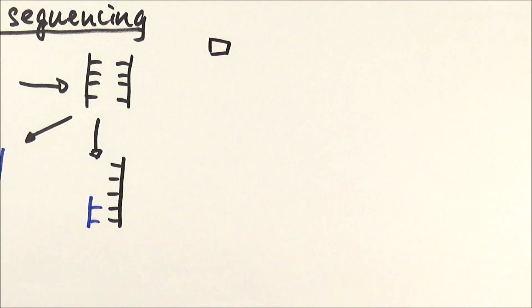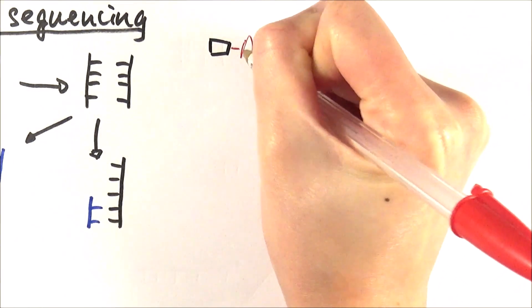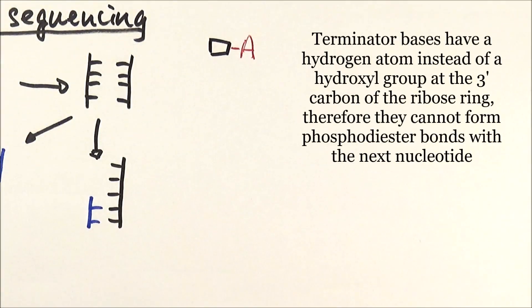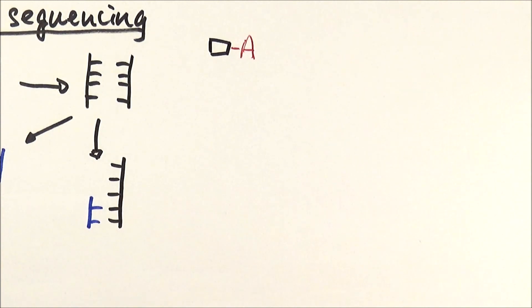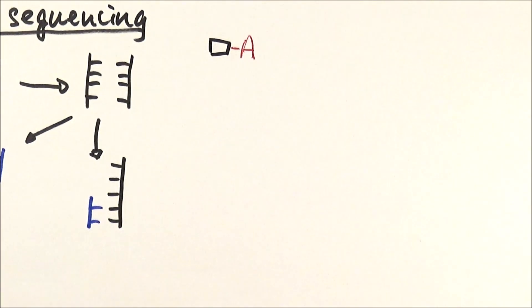Imagine we've got one of the bases here. Normally, if it's just normal nucleotides, it will just keep adding on. However, in this particular case we've got a terminator base adenine added to it. Because terminator bases are missing an oxygen on the third carbon of the ribosugar on the nucleotide, it cannot form a new phosphodiester bond with the phosphate group of the next nucleotide. Therefore, once the terminator base binds to it, it can no longer extend the strand. So it stops there.